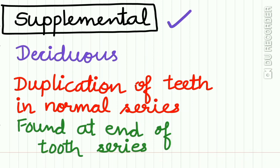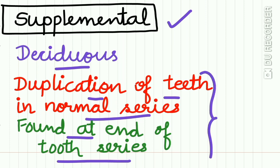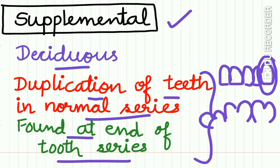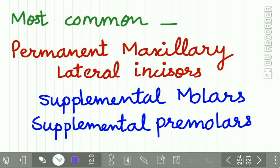The third type is the supplemental type. Most supernumerary teeth found in the deciduous dentition are of supplemental type. These show duplication of teeth in a normal series and are mostly found at the end of the tooth series. For example, after the lateral incisor series is complete, an extra incisor is the supplemental incisor. Similarly, an extra molar appearing at the end of the first and second molar series is the supplemental molar.